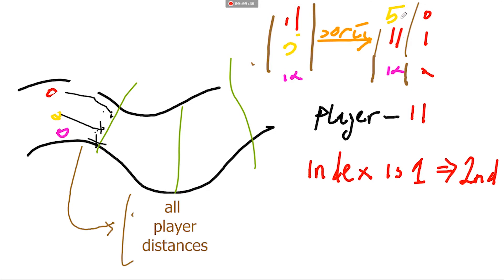If 11 was the first index, that's if it's an index of 0, then the player's position is first.